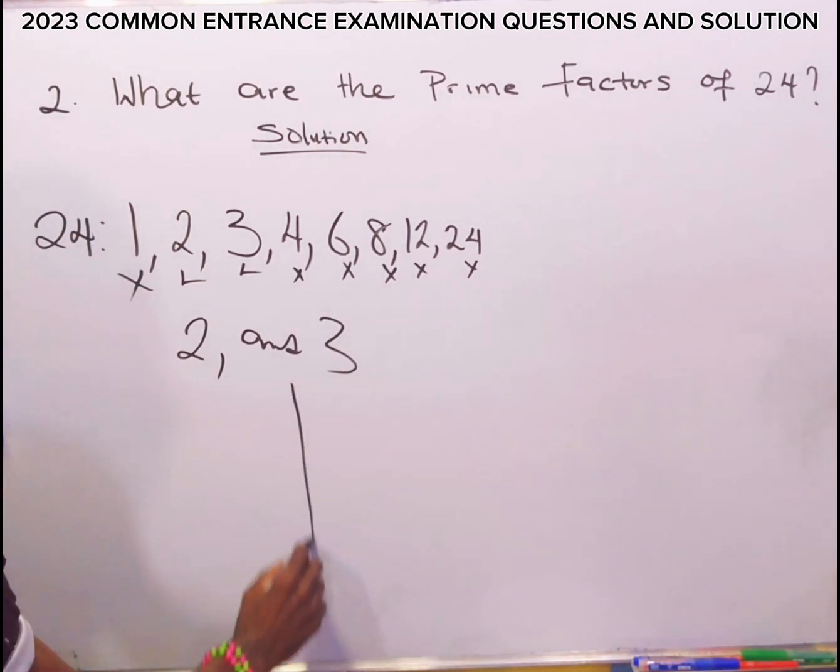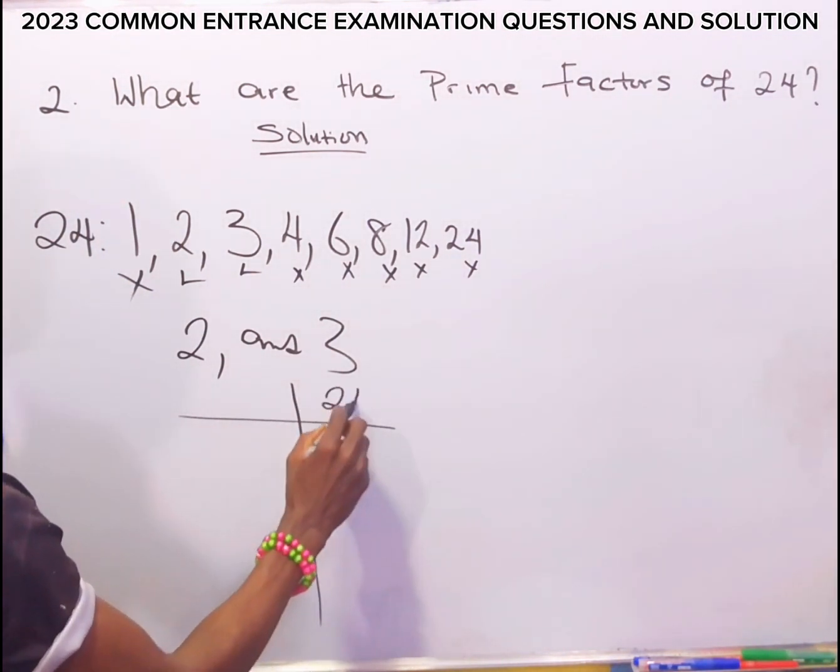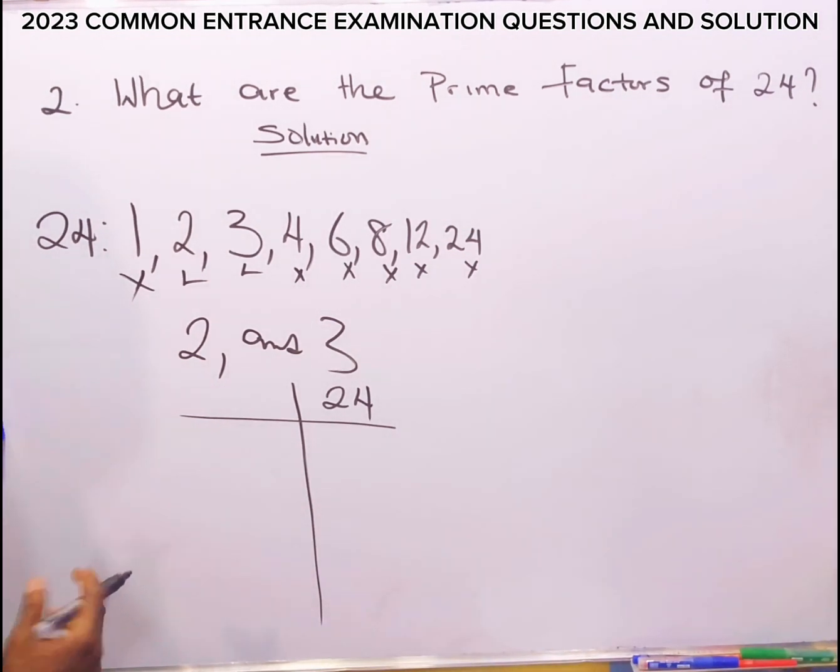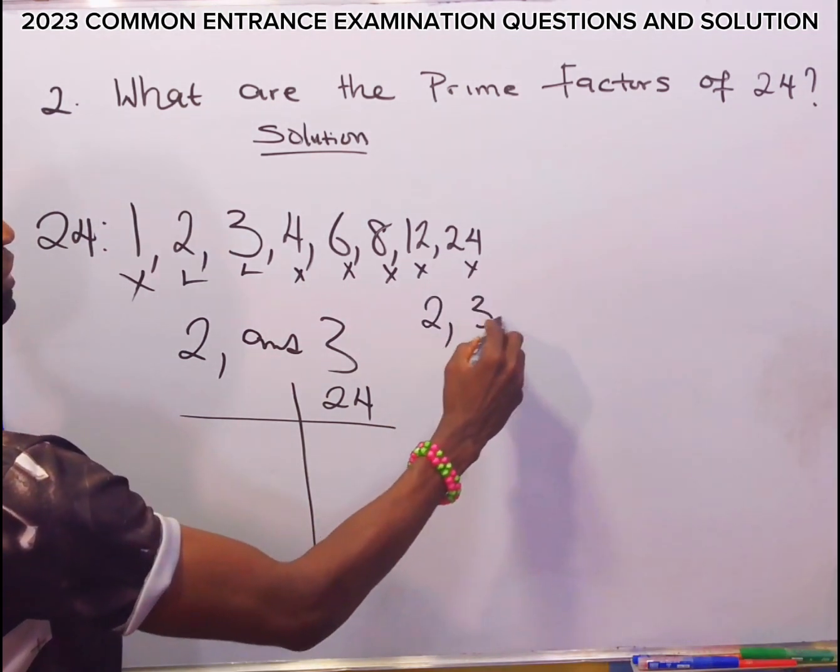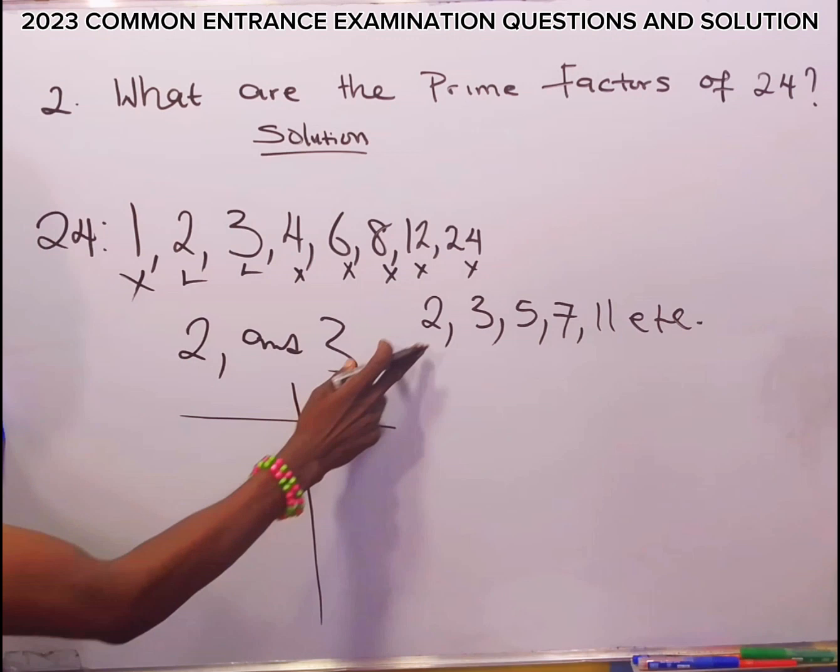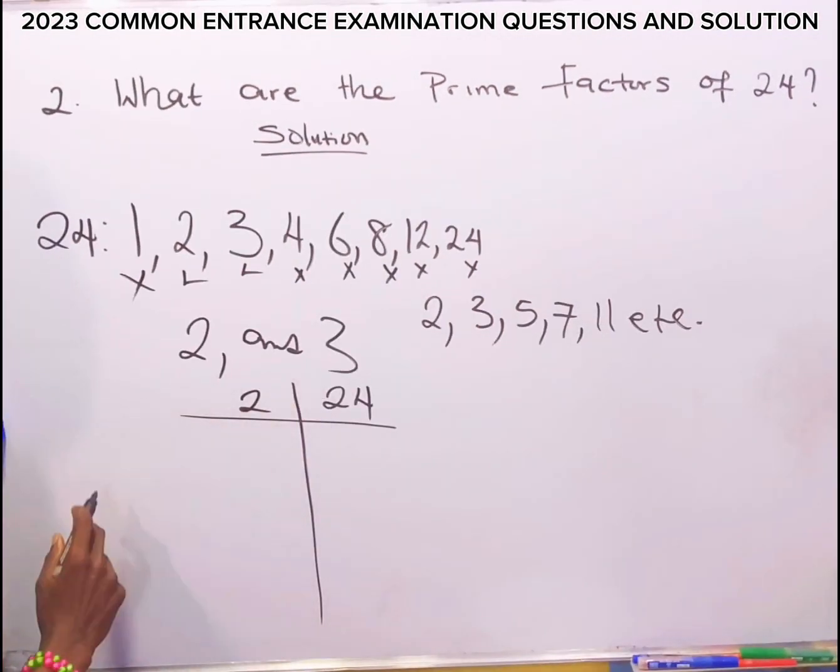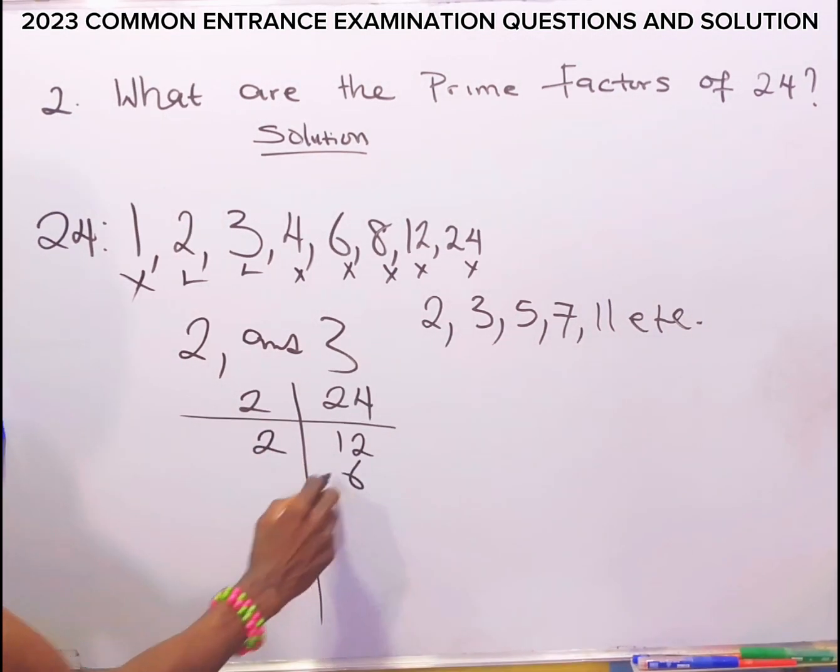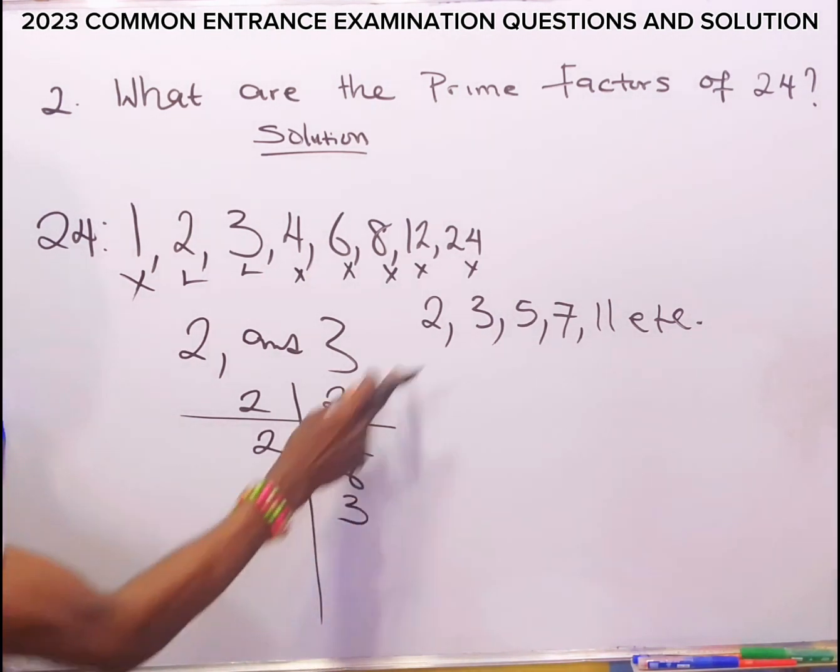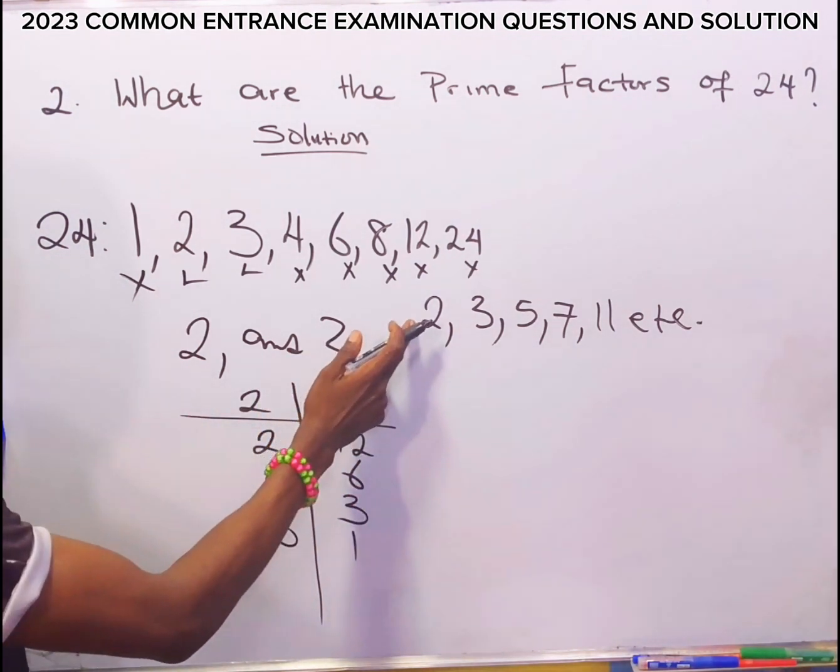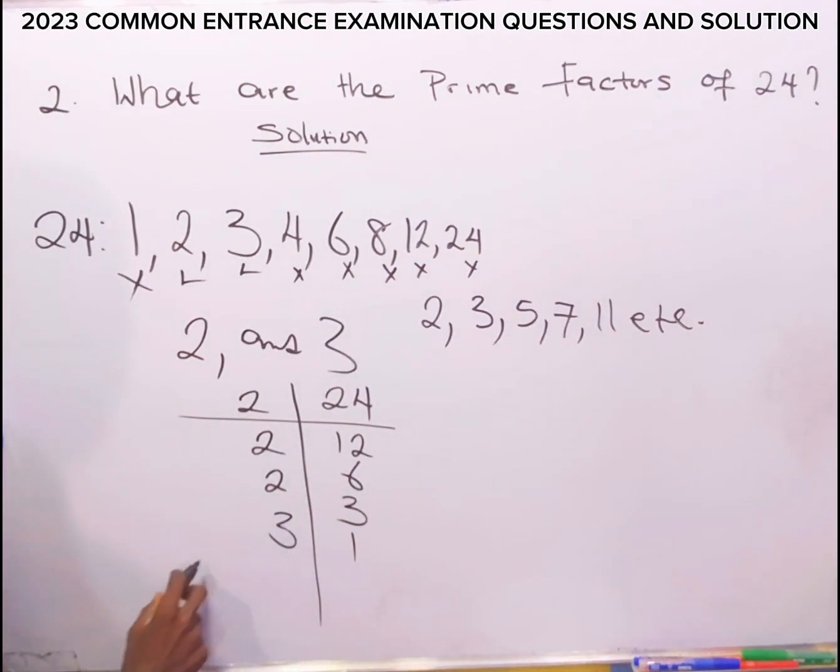Now, the second method we can use to find the prime factors of 24 is by dividing 24 to its lowest term using prime numbers. Examples of prime numbers are 2, 3, 5, 7, 11, etc. Now, 2 is a prime number and 2 is a factor of 24. So let's use 2 to divide 24. 2 divided into 24 will give us 12. 2 also can divide 12. 2 divided into 12 will give us 6. 2 can divide 6. 2 divided into 6 will give us 3. Now, 2 cannot divide 3. So let's use 3. 3 divided into 3 is 1. We can't use 1 because 1 is not a prime number. So our prime factors here are 2, 2, 2, and 3.